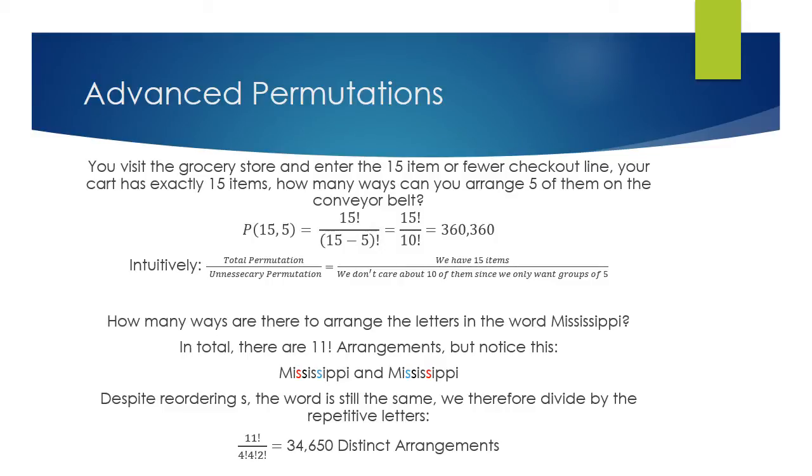the four I's, the four S's, and the two P's, and all the ways that you can arrange those. So hence, you see we have 11 factorial over 4 factorial times 4 factorial times 2 factorial. So those represent those repetitive letters.